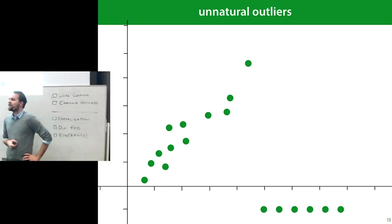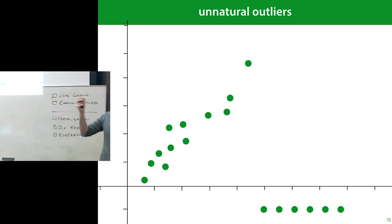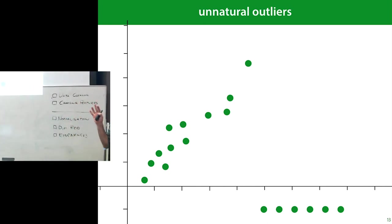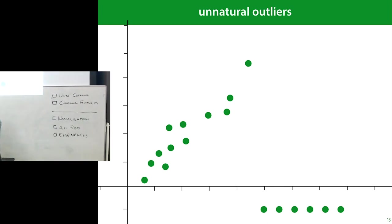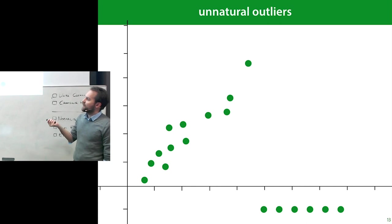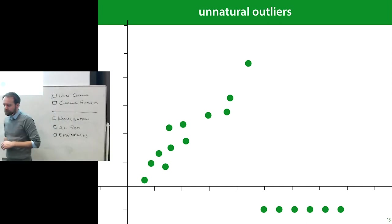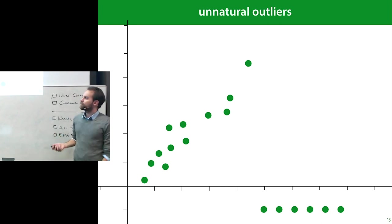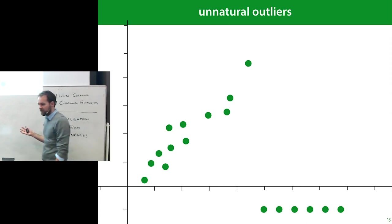The first thing to ask when you see outliers is: are they natural or unnatural? Here we have a natural data distribution, say weight versus height, and a bunch of instances that just don't follow that distribution. Quite often this happens when a data system doesn't allow a natural way of filling in missing values — people set them to minus one and you get something like this. These are unnatural outliers, so you can basically treat them like missing values: remove them if you can, impute them otherwise.